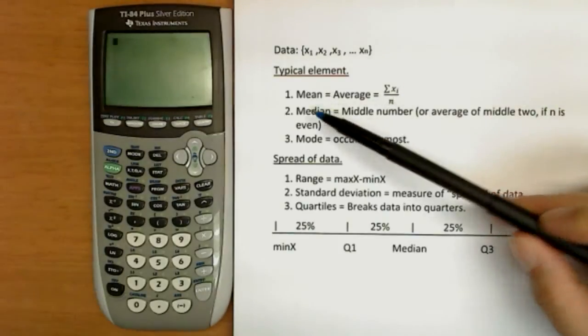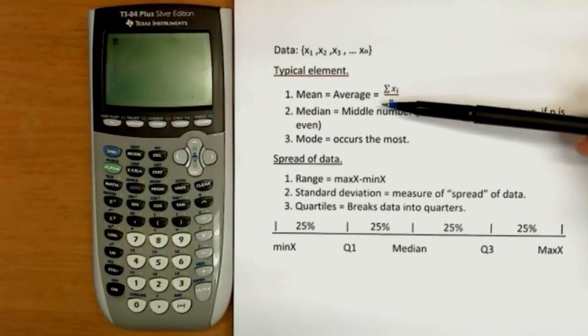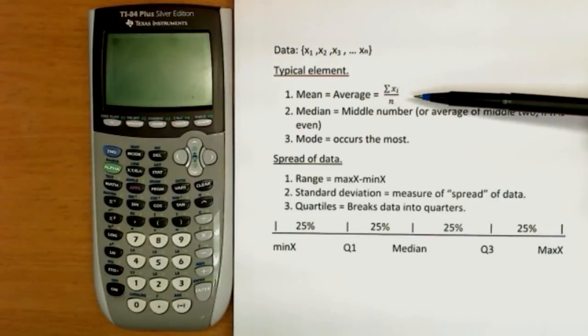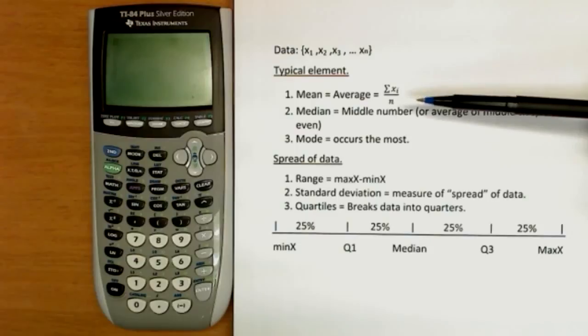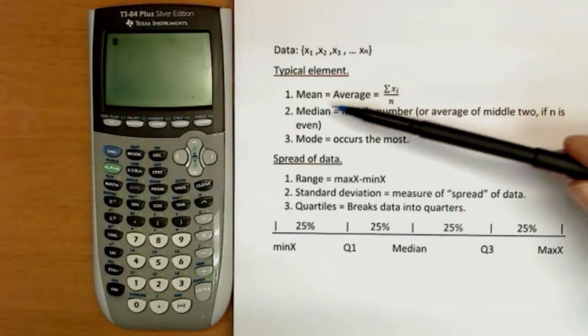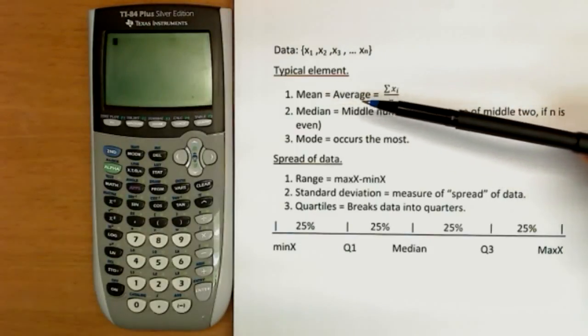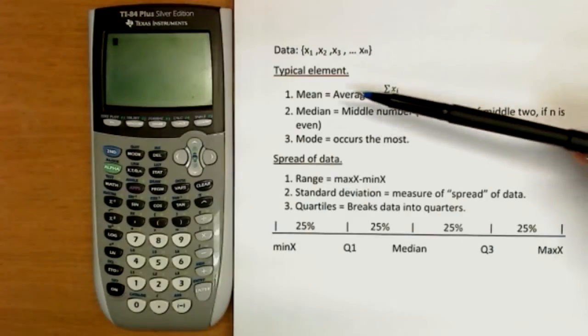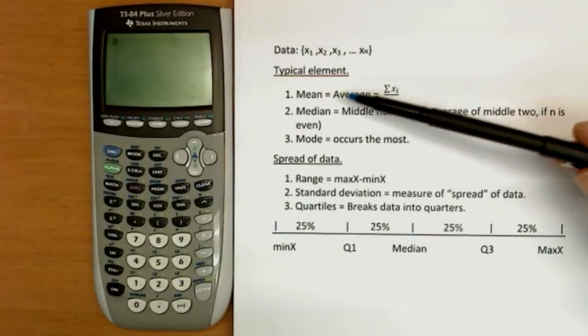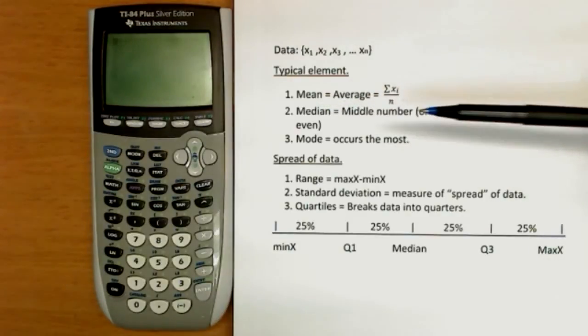The reason we tend to call that mean is the word average in common talk has a different connotation sometimes than it maybe does mathematically. So to be specific, average usually means typical. And sometimes the mathematical, the statistical average or mean really is a typical element, but other times it's not.